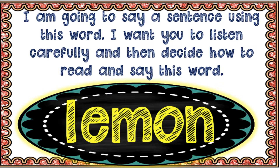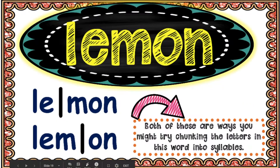I'm going to say a sentence using this word. Listen carefully and then decide how to read it. I put a blank in it — would it be 'lem-on' or 'li-mon'? It's a lemon. The syllable break is after the M, so it would make it a short E.